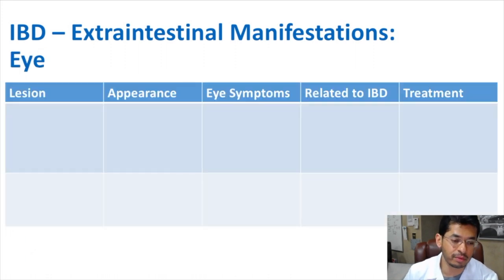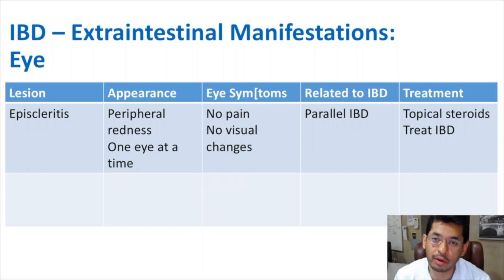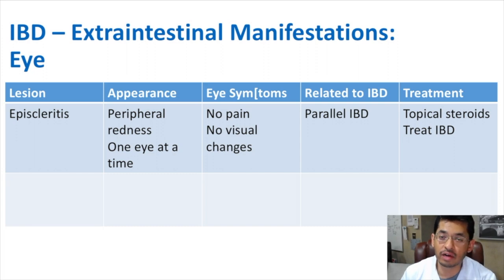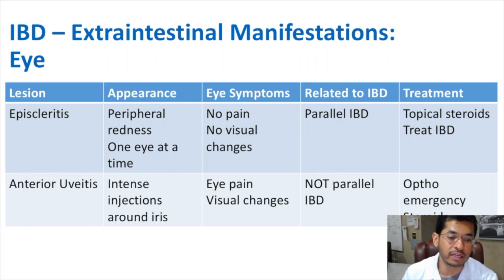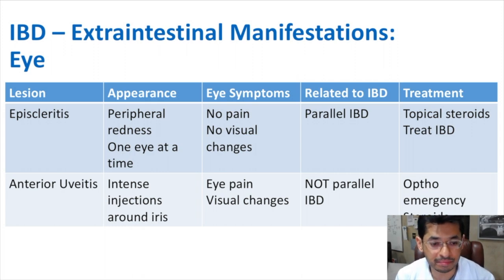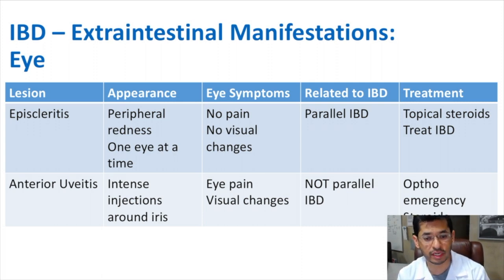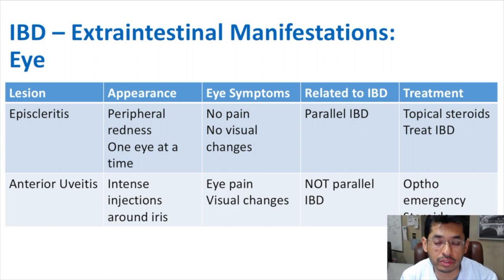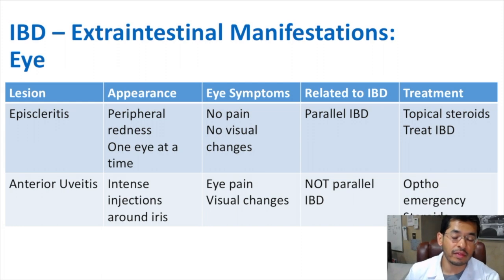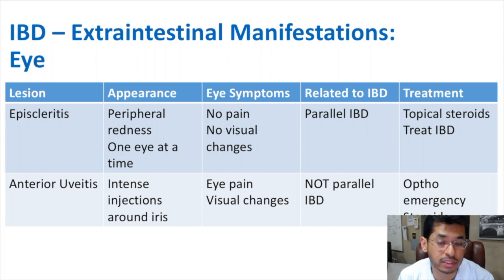Looking at eye manifestations, we talked about episcleritis, which tends to parallel the disease process and typically involves very minimal pain. But there are other eye manifestations of inflammatory bowel disease, including anterior uveitis, which is a pretty significant eye emergency. This is where you have intense injection around the iris, causing severe eye pain and visual changes. This is associated with IBD and is a very serious medical emergency requiring emergent ophthalmological consultation. Anterior uveitis does not typically parallel the course of IBD.